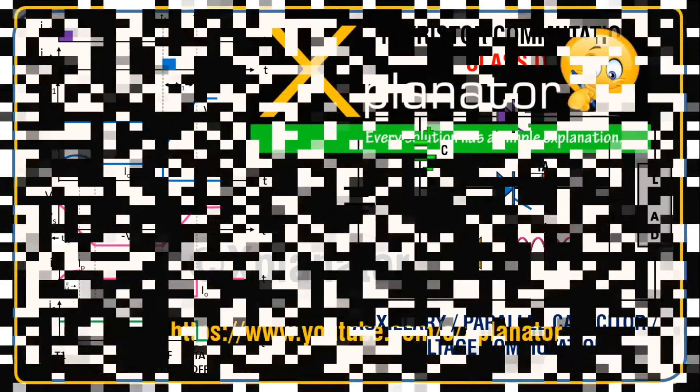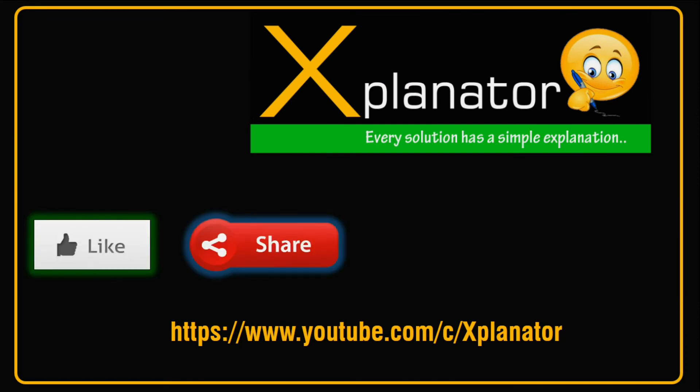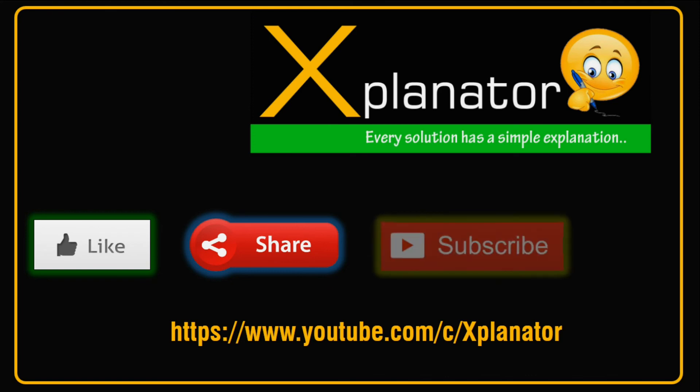That was an explanation about waveforms for class D thyristor commutation circuit. Give it a thumbs up and do share if you found this content helpful. Hit the subscribe button for more content and check the bell icon to never miss an update from Xplanator because every solution has a simple explanation.